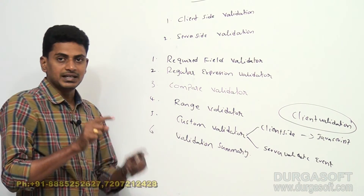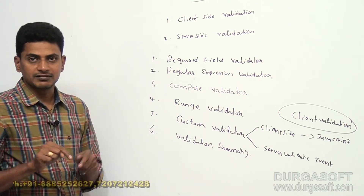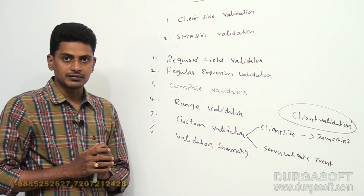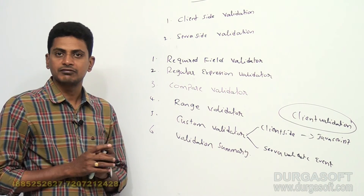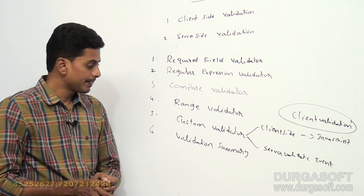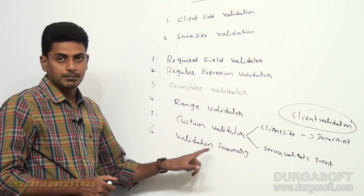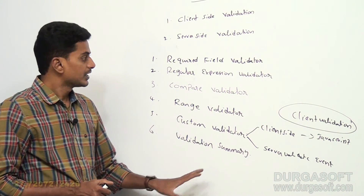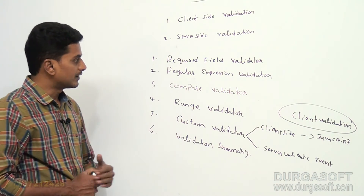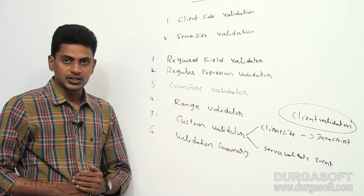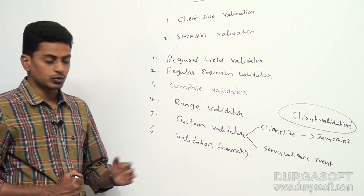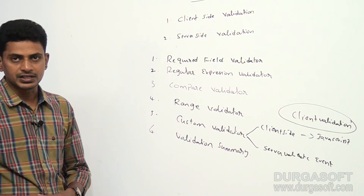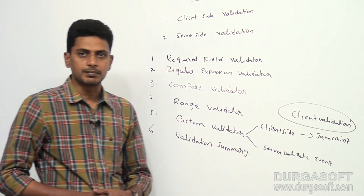Validation Summary does not perform any validations itself. Rather, the Validation Summary control will display all error messages of all remaining validation controls together at one time. If you want to display all false messages of all validation controls to the user at once, we use Validation Summary. We will discuss each of these validation controls practically, including how to perform client side and server side validation.